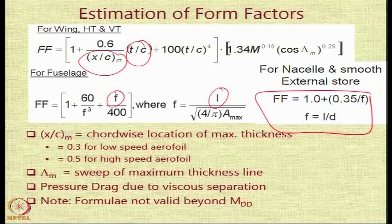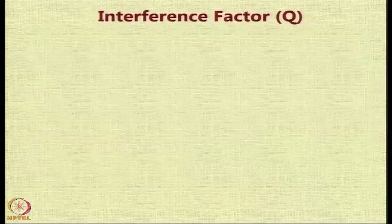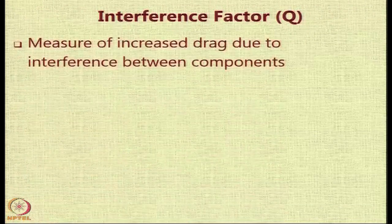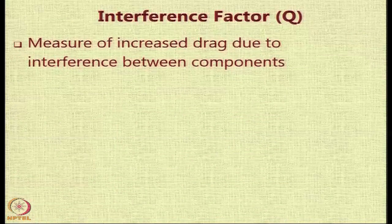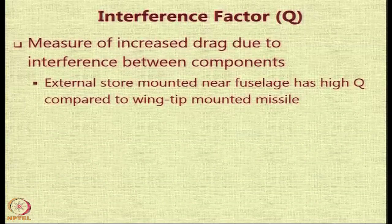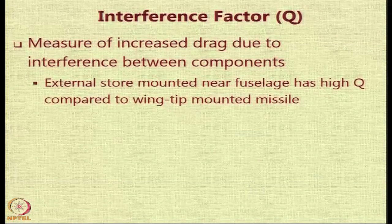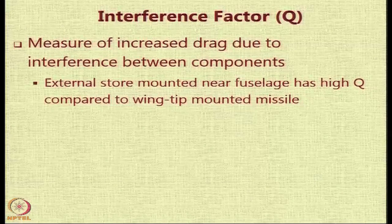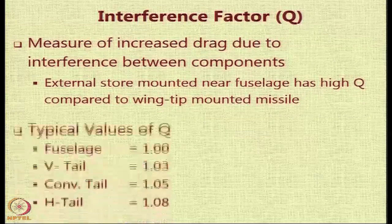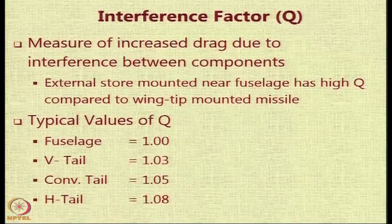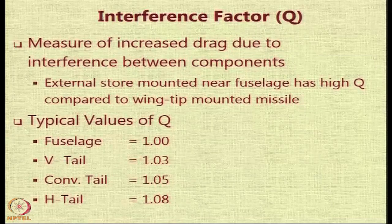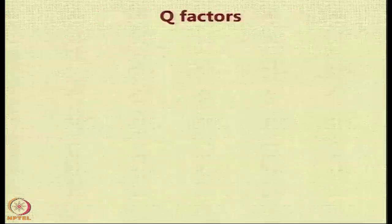These formulae are not to be used beyond the drag-divergence Mach number MDD; they apply only for subsonic flow. The interference factor Q is a measure of the effect of one component's presence on a nearby component. For an external store such as a bomb, rocket, or drop tank suspended below the aircraft, mounting it near the fuselage gives a very high Q value compared to mounting it near the wingtip. With the fuselage as baseline, Q equals 1.0, and various tail configurations — V-tail, conventional tail, H-tail — each have different recommended Q values.